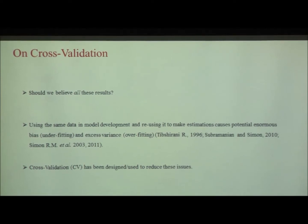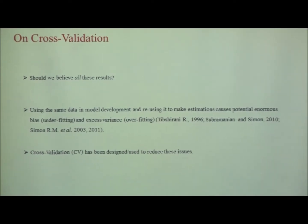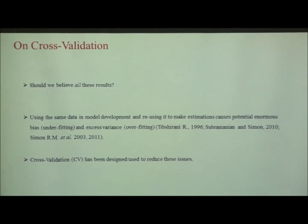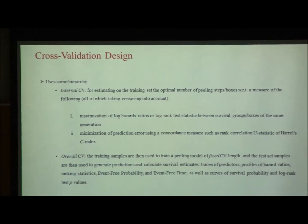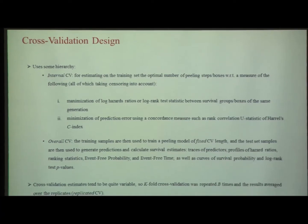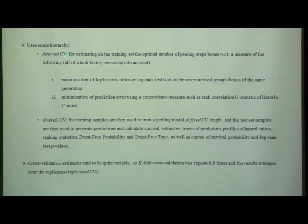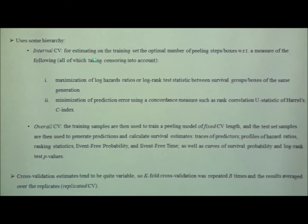Should we believe all these results? Probably not. We know that if we use the same data for model development and for estimation, everything is biased — sometimes severely biased — and you can have excess variance. Cross-validation has been designed and used to reduce these issues of underfitting and overfitting. In our survival PRIM bump hunting, I use cross-validation — specifically an internal first step of cross-validation for estimating on the training data set. I cross-validate the number of peeling steps of the peeling loop, which I can do with respect to maximization of log hazard ratio or a V statistic, or using a criterion like minimization of prediction error with Harrell's C concordance index.